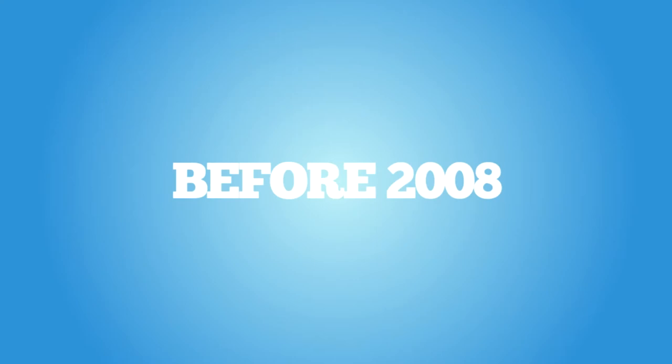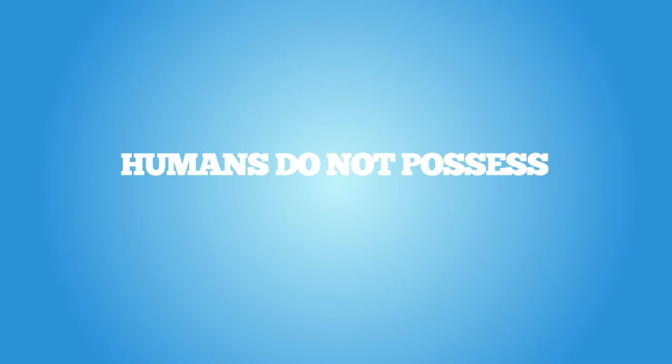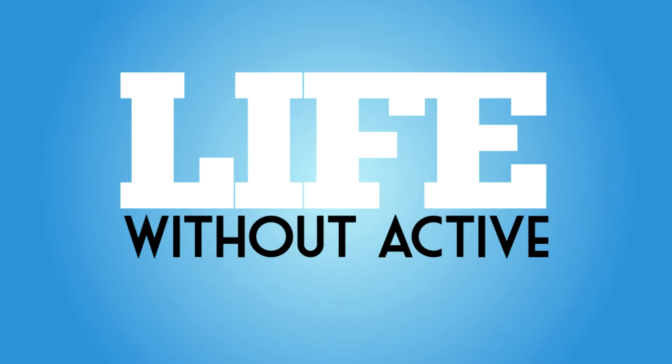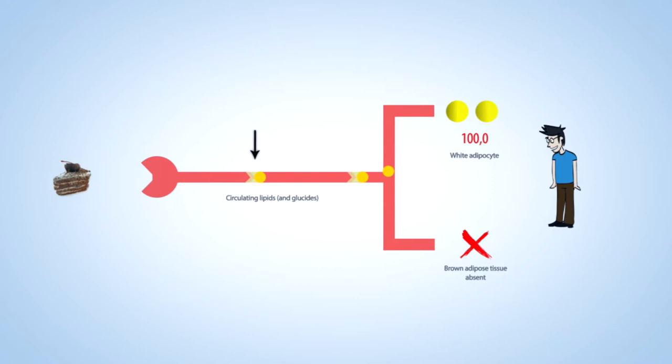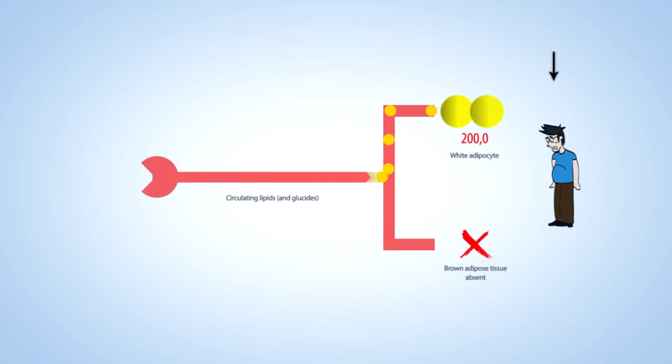Before 2008, it was generally admitted that, contrary to rodents, humans do not possess brown adipose tissue. The diagram shows, starting from food ingested in excess, via circulating lipids, fat accumulation in the white adipose tissue. This accumulation results in the swelling of the white adipocytes and in the development of obesity.